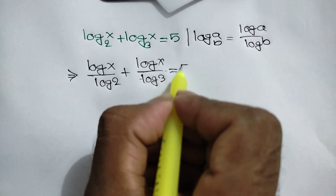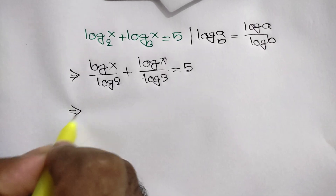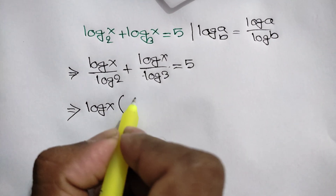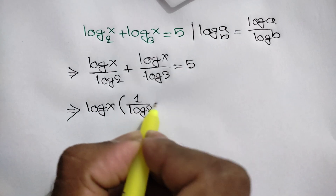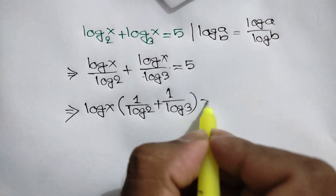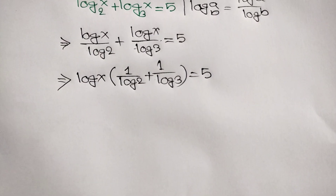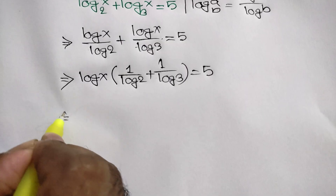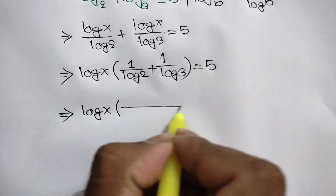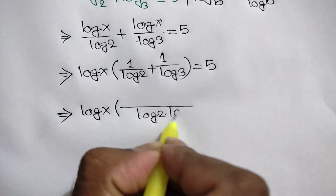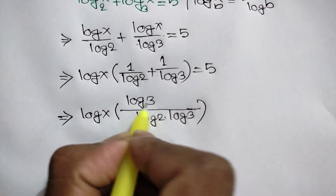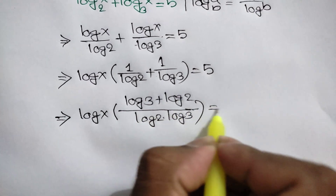This is equal to 5. Now taking out log of x, we get log of x times 1 over log of 2 plus 1 over log of 3 is equal to 5. Taking the LCM as log of 2 times log of 3, we get log of x times log of 3 plus log of 2 over log of 2 times log of 3 is equal to 5.